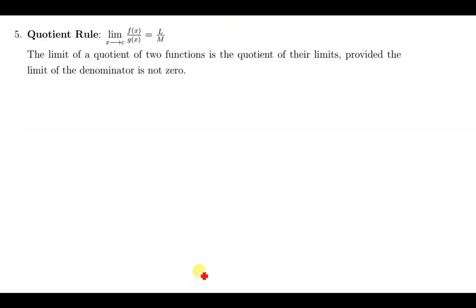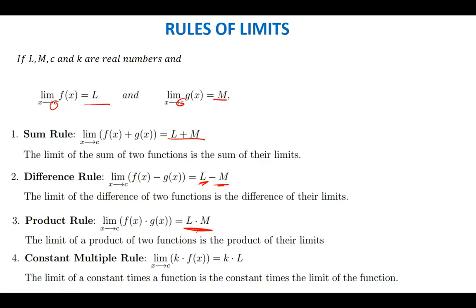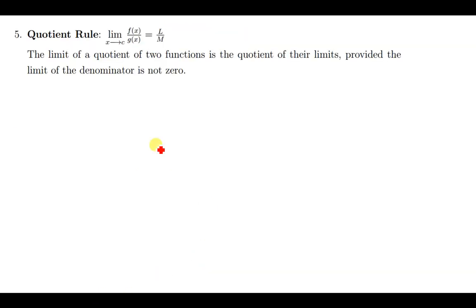The same applies when you have a constant. If you have a constant k multiplying a function, you can factorize k out and find the limit of f(x) — which equals L — then multiply k by that solution, giving k·L. The same logic applies to division: dividing two functions f(x) and g(x) is the same as dividing their solutions L and M, as long as you approach the same value c.